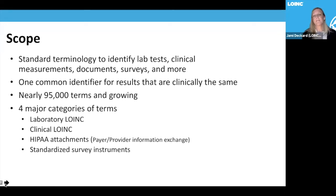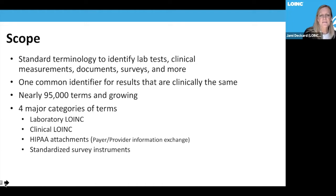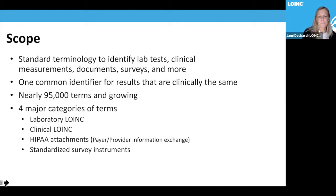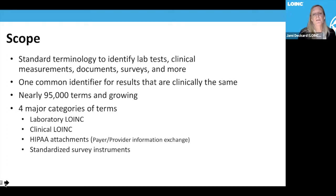The scope of LOINC is a standard terminology to identify lab tests, clinical measurements, documents, surveys, and more — one common identifier for results that are clinically the same. There are nearly 95,000 terms and growing; about 60% are lab LOINC terms, with around 20,000+ clinical terms. We also have HIPAA attachments, which overlaps between clinical and laboratory spaces, and standardized survey instruments. These four categories — lab, clinical, attachments, and surveys — are how we group and classify everything.